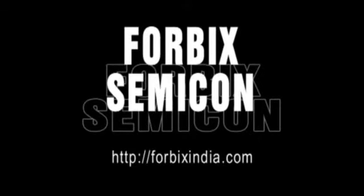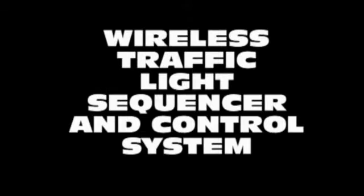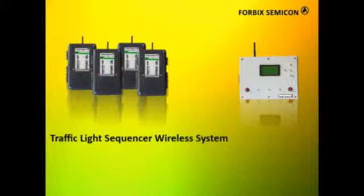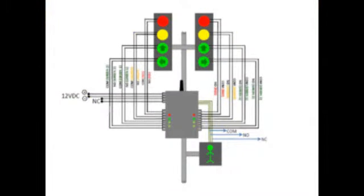Welcome to 4BICS Semicon Traffic Light Sequencer and Control System Video Demonstration. This system consists of one master controller unit and multiple slave driver units. Each slave driver connects to the traffic lights for each road. The complete combination shown here is for a road junction.